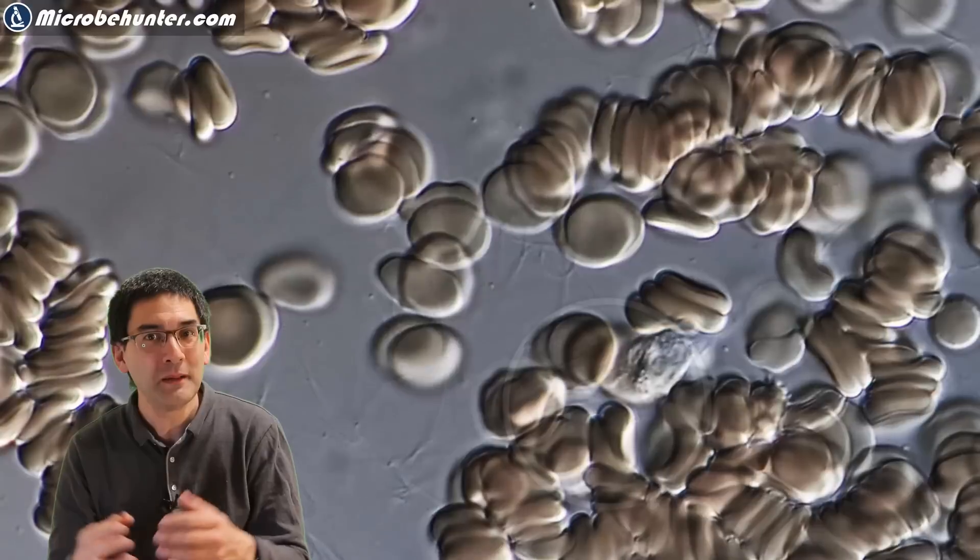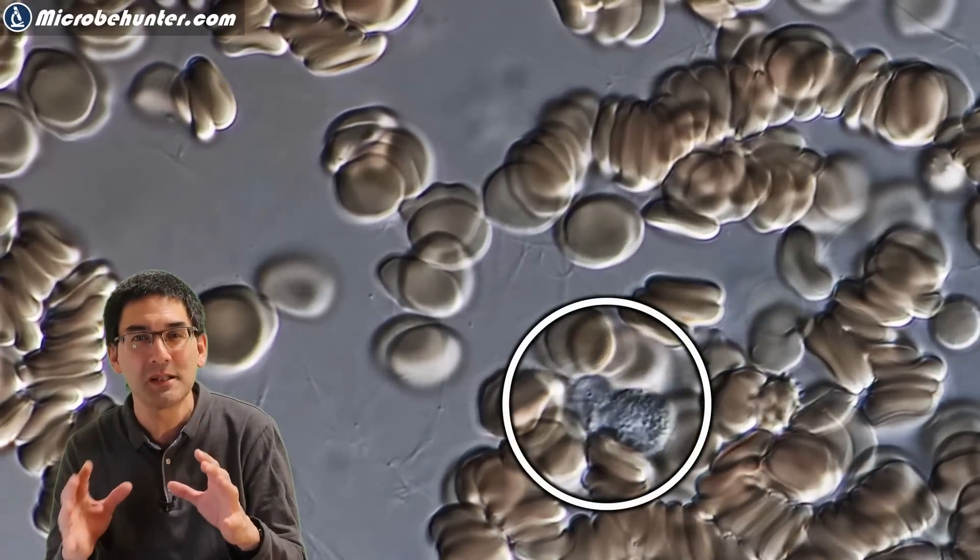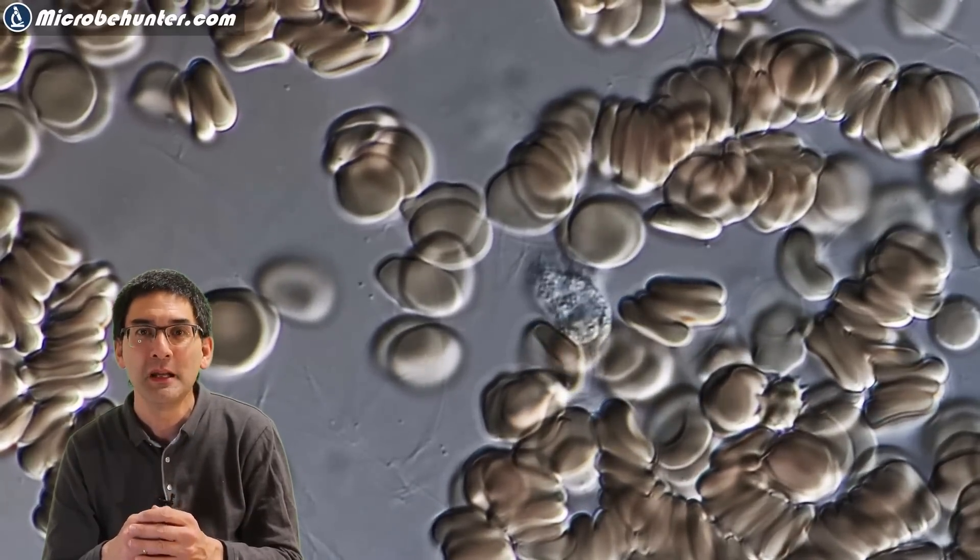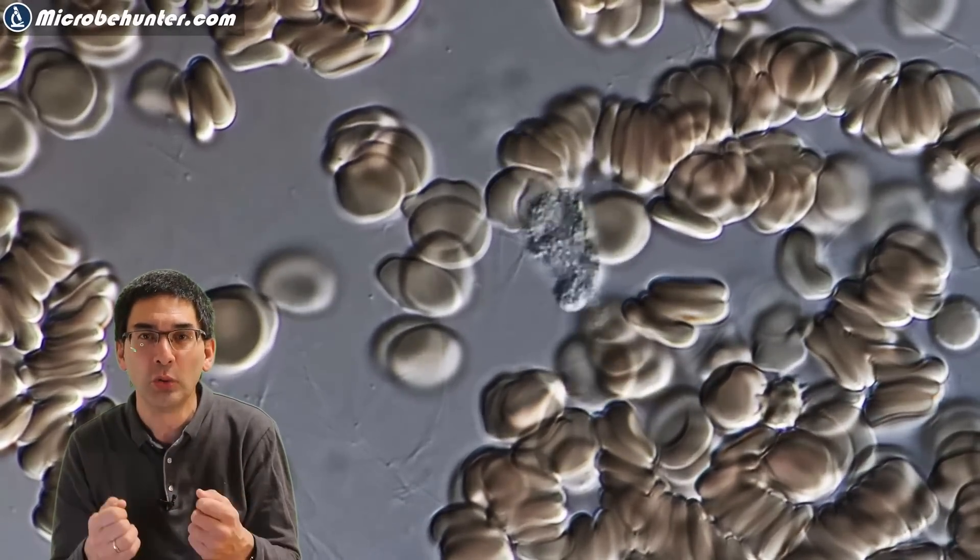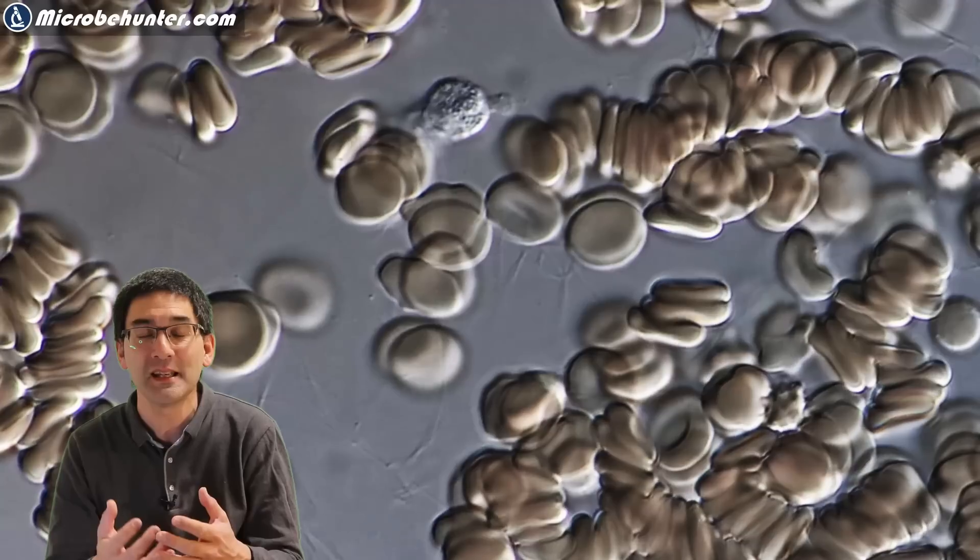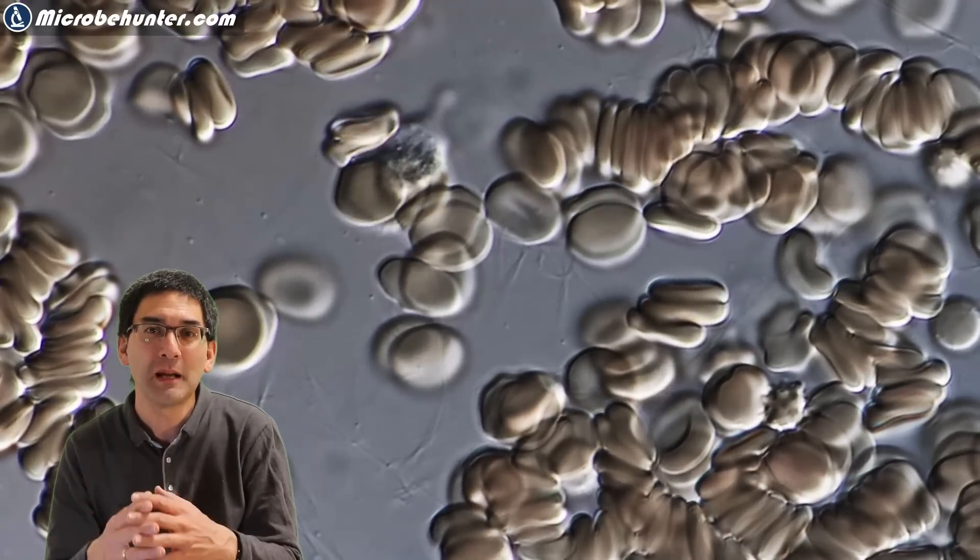When you look at the slide under the microscope, sometimes the red blood cells do cover them up a little bit, so they can be difficult to see. Also because they move so slowly, it can be difficult to identify them.